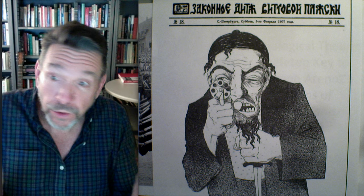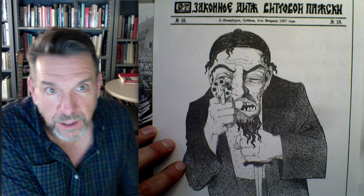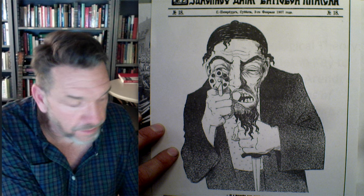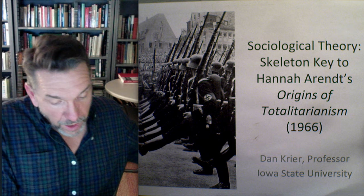Here's an image from 1907 of an antisemitic journal in Russia, depicting some of the same images and stereotypes — here the figure appears to be a Jewish anarchist. Towards the end of the book, Arendt makes comparisons between Nazism and Stalinism. The same stereotypes appear across different countries and contexts.